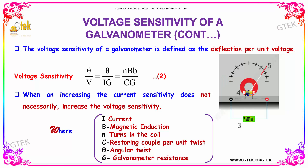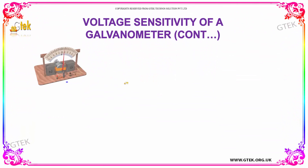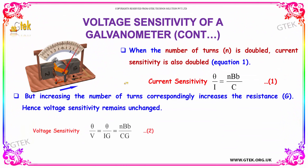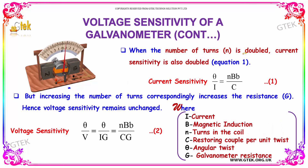Increasing the current sensitivity does not necessarily increase the voltage sensitivity. When the number of turns n is doubled, the current sensitivity is also doubled — the current sensitivity equals theta by i, which equals n·B·b divided by c. But increasing the number of turns correspondingly increases the resistance g, hence the voltage sensitivity remains unchanged, as given by this equation.